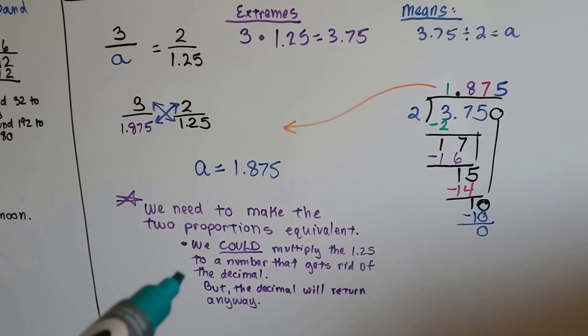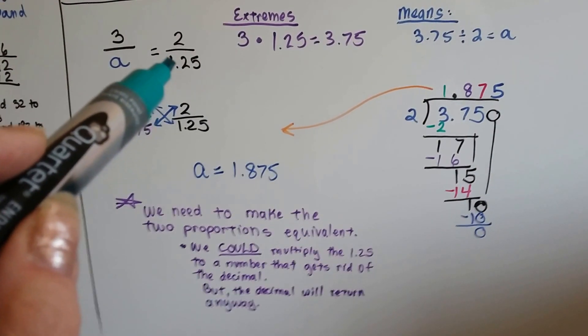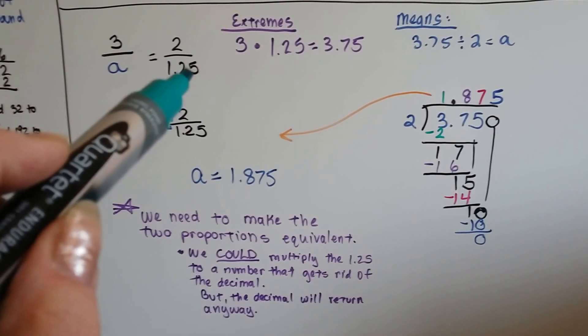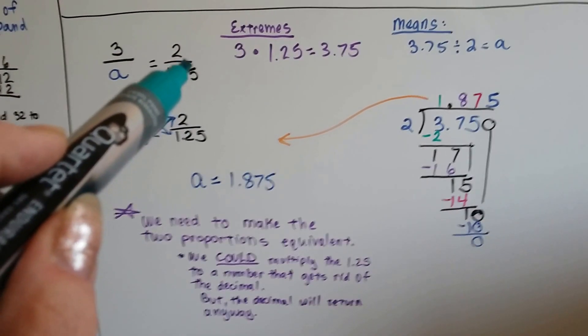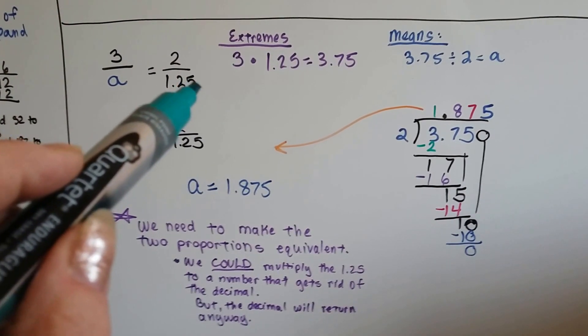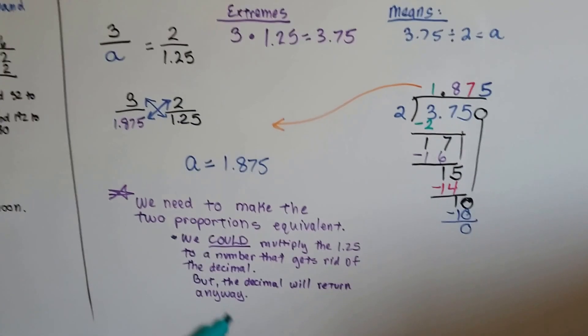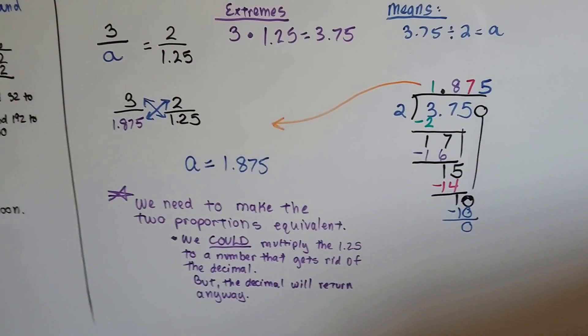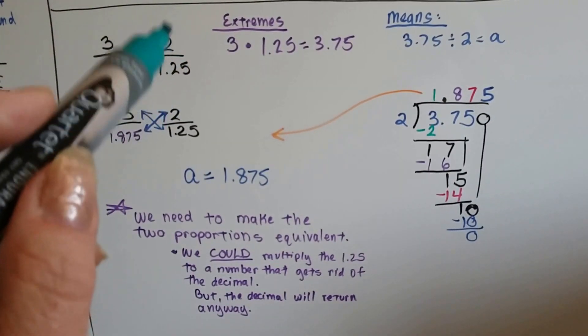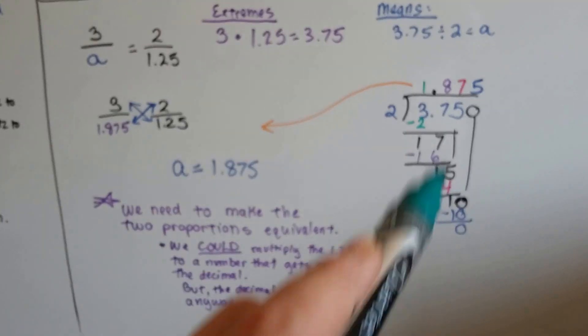Now we could have multiplied the 1.25 to get rid of the decimal. I know 4 25s makes a whole one, so we could have made it a 5 by multiplying it by 4, and then we would have multiplied the 2 by a 4, and we would have 8 over 5. But it would have turned into a decimal anyway. So it was easier to just use the means and extremes way of cross-multiplying to find the answer and then dividing.